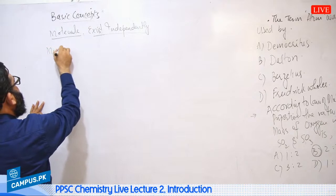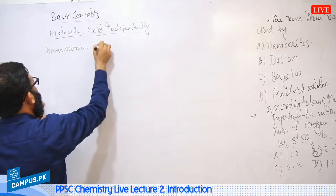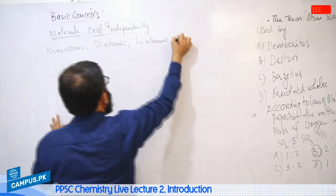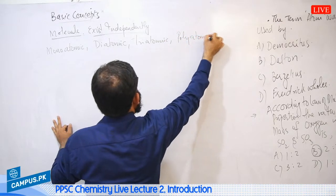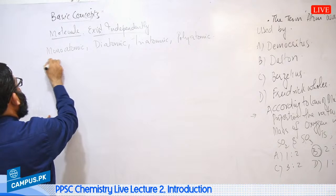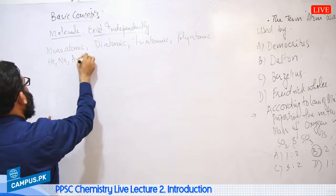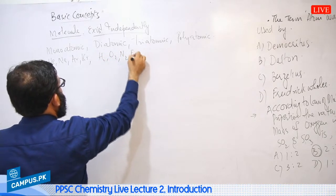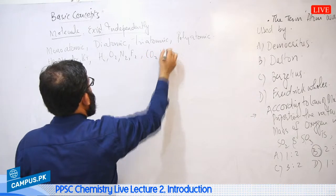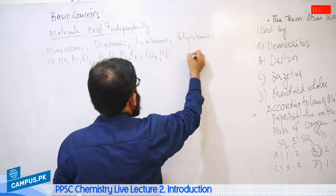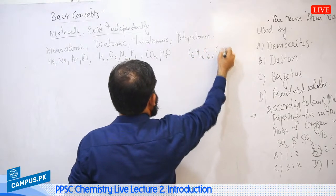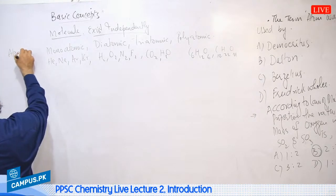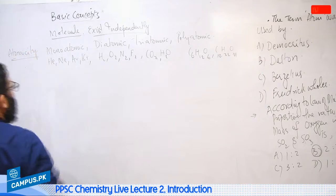A molecule may be monatomic, diatomic, triatomic, or polyatomic. Examples: monatomic - noble gases (helium, neon, argon, krypton, xenon); diatomic - H2, O2, N2, F2; triatomic - CO2, H2O; and polyatomic - C6H12O6, C12H22O11. The number of atoms in a molecule is called atomicity.